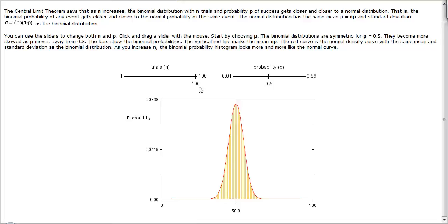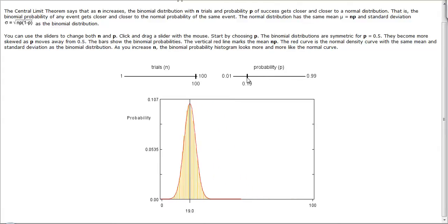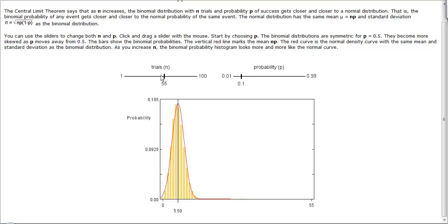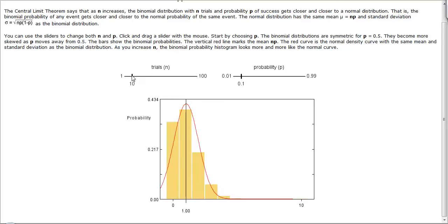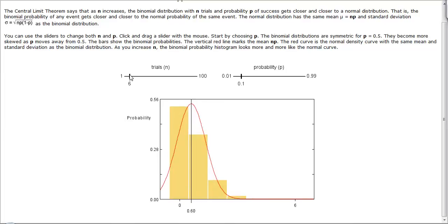As you increase the number of trials, this would overlay even better. Now, what happens if we change this probability to go down to maybe just 0.1, and we change the number of trials to maybe just 6?